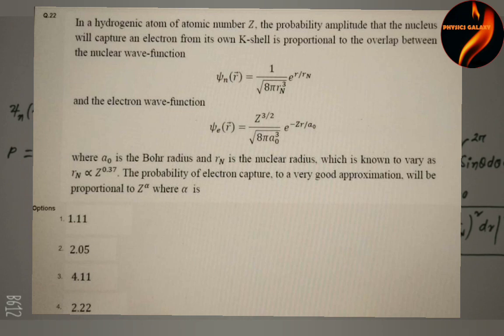The wave functions ψn(r) and electron wave function ψe(r) are given, where a0 is the Bohr radius and Rn is the nuclear radius, which is known to vary as Rn is proportional to Z to the power 0.37. The probability of electron capture to a very good approximation will be proportional to Z to the power alpha.